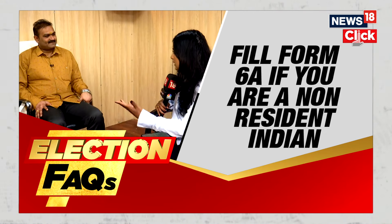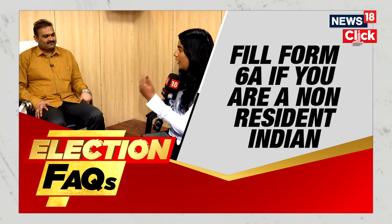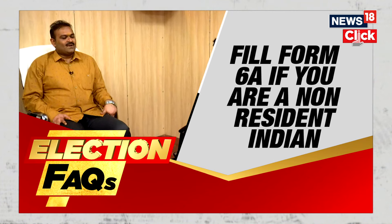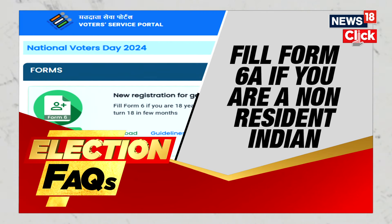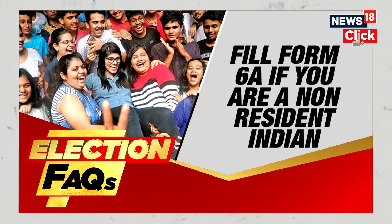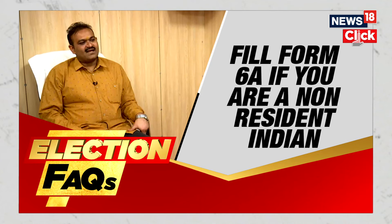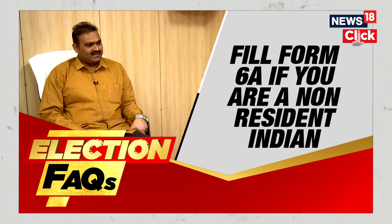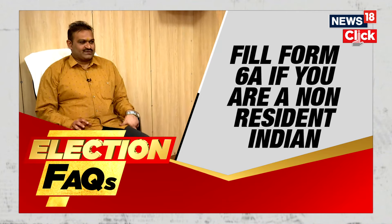Once we submit all the documents, does the voter ID come to our residence or do we have to go and collect it? Once an eligible voter applies for enrollment, they immediately receive an acknowledgement on their registered mobile number. At each stage of processing, they get an update by SMS. Once the electoral registration officer approves the application, the applicant can immediately download the e-EPIC. After that, the physical EPIC is delivered by speed post.